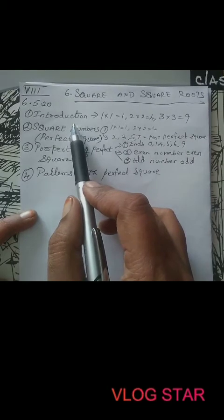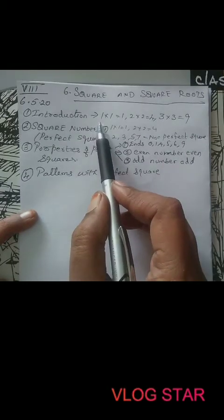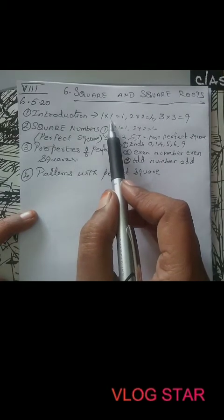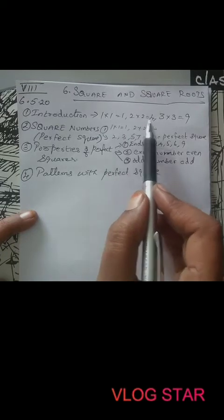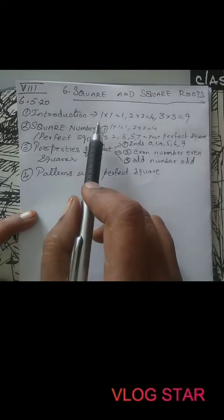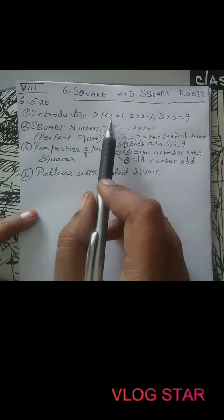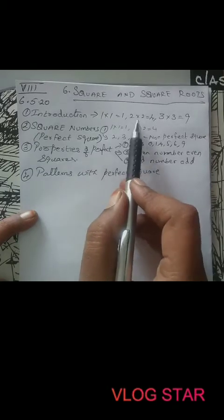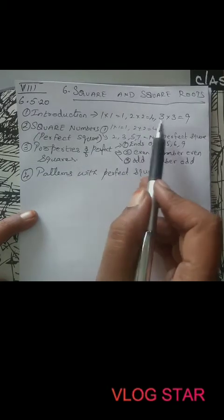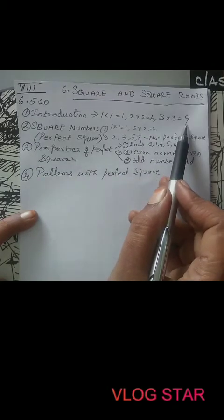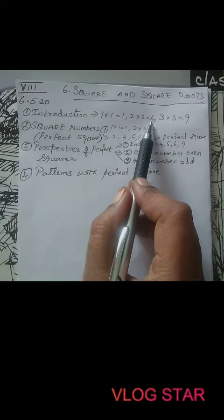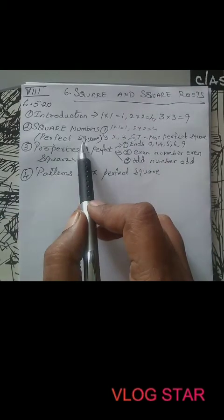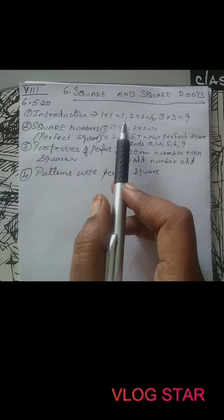First, introduction: what is a perfect square? Any number multiplied by itself — the answer we get, we call it a perfect square. Like 1 times 1 is 1, 2 times 2 is 4, 3 times 3 is 9. When a number is multiplied by itself, the result is called a perfect square.